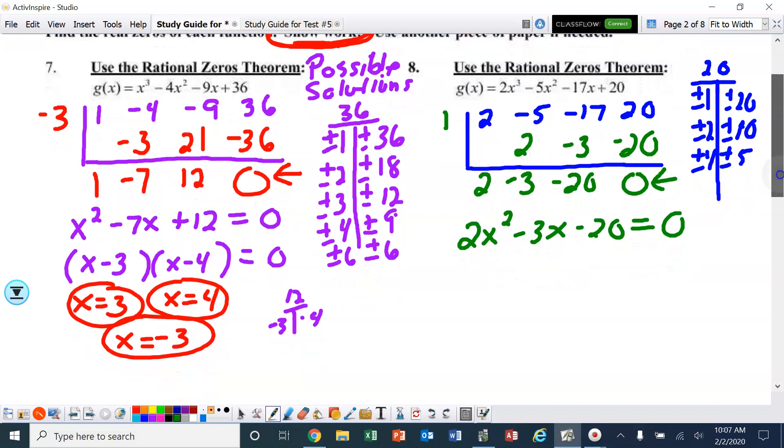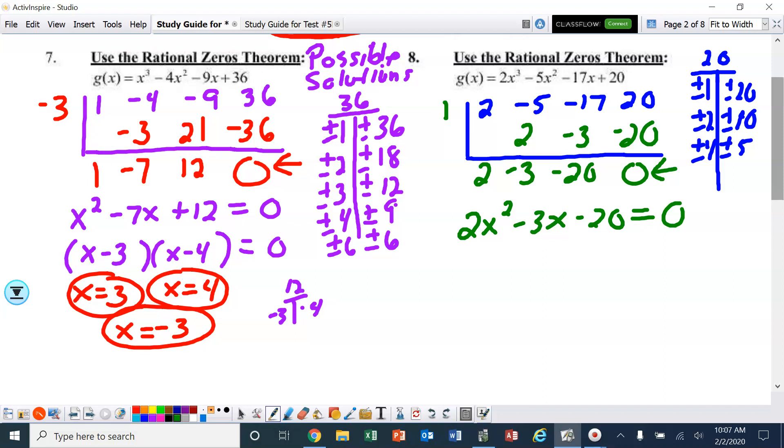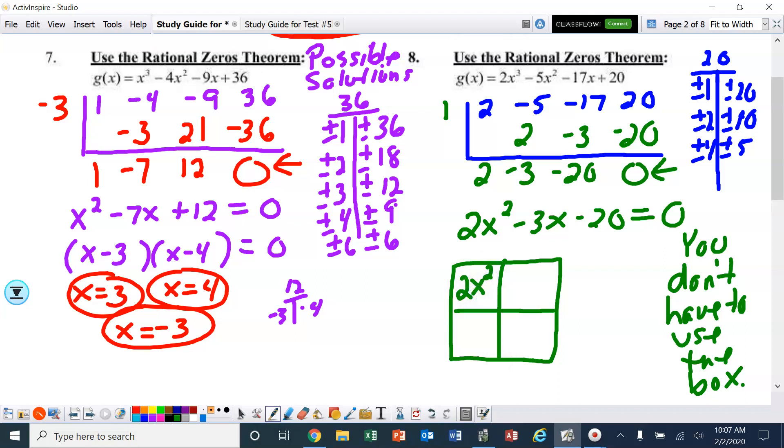Now I'm going to use the box method to factor this. You do not have to use the box; if you can factor without the box, that's fine. But I prefer it because I don't like guess and check very much. The first term goes in the upper left, the third term goes in the bottom right. I multiply the two corners together, I get -40.